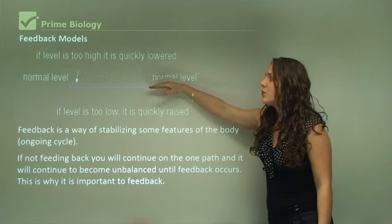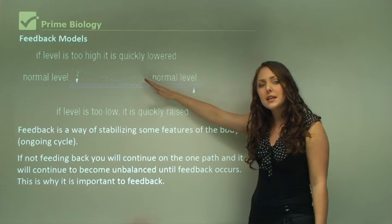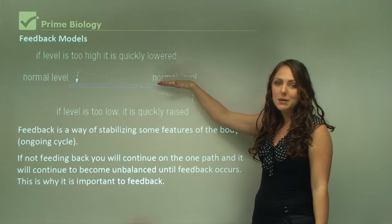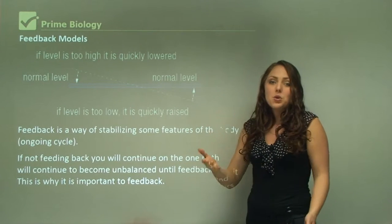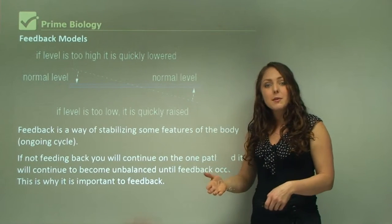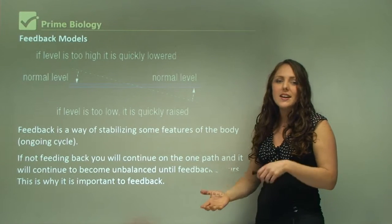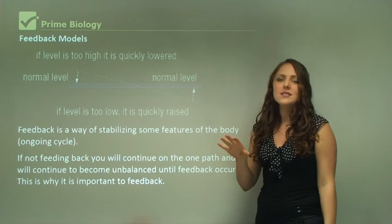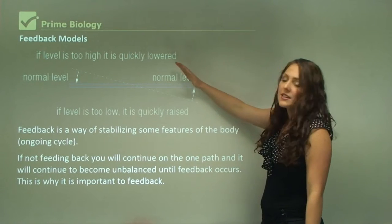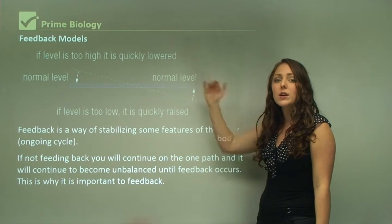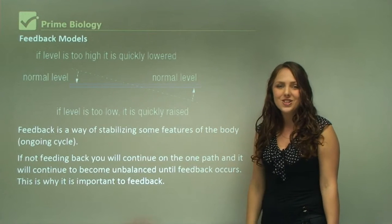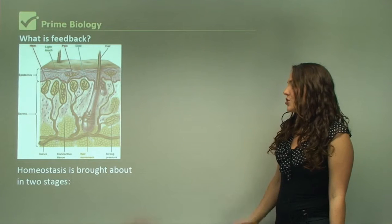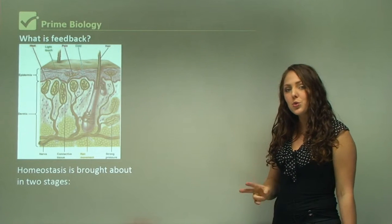Let's say for example this is the normal level here. If this normal level tips in either direction, it needs to be brought back to the same level. An example is temperature — when your temperature increases or decreases outside of that 37 degrees Celsius range, it will want to tip back to normal and bring your body temperature back to 37 degrees Celsius.